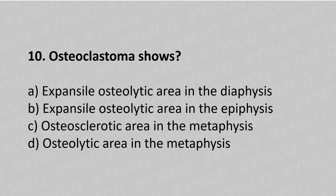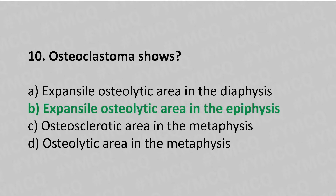Now let's move to question number 10. Osteoclastoma shows — option A: expansile osteolytic area in the diaphysis, option B: expansile osteolytic area in the epiphysis, option C: osteolytic area in the metaphysis, option D: osteolytic area in the metaphysis. The answer is option B: expansile osteolytic area in the epiphysis.